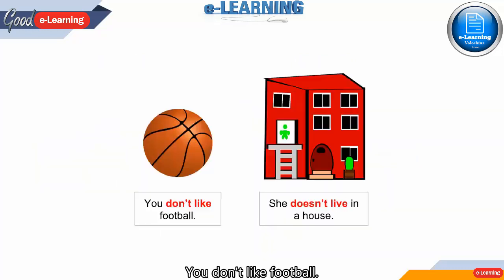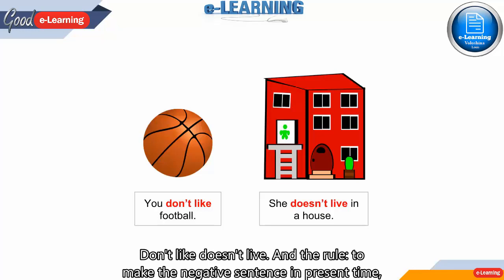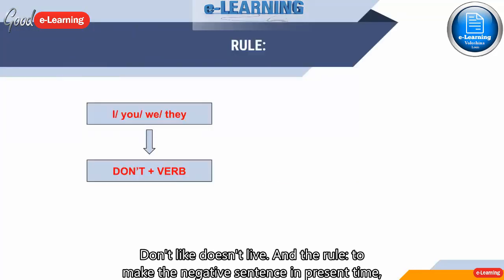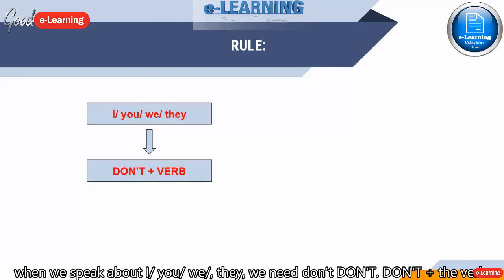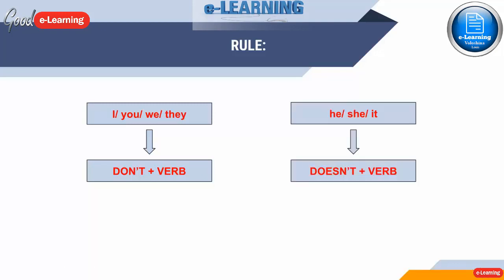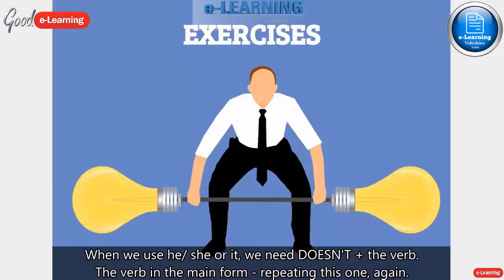You don't like football. She doesn't live in a house. If you remember only these two sentences, it will be enough for you to be sure that your sentences are correct. Don't like. Doesn't live. The rule: to make the negative sentence in present simple — for I, you, we, they: don't plus the verb. For he, she, or it: doesn't plus the verb in the main form.